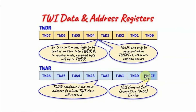Next we have the address register, which is programmed in the slave device and contains the 7-bit address of the slave. The least significant bit is the general call recognition bit. When this bit is set and the master sends address 0, this will initiate an interrupt and an interrupt service routine will be processed.